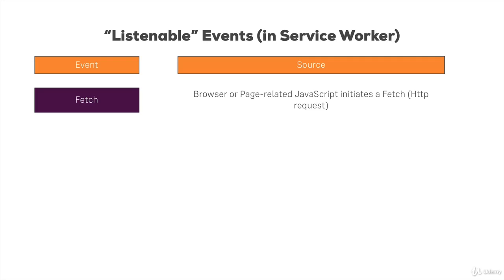Whenever you use the fetch API — you will learn more about it in the next course module — whenever you use that API in your own JavaScript code, you also trigger such a fetch request. Important: you don't trigger a fetch request if you use the normal traditional Ajax request in JavaScript. So the XMLHttpRequest or any package like Axios, which builds on that, won't trigger the fetch event.